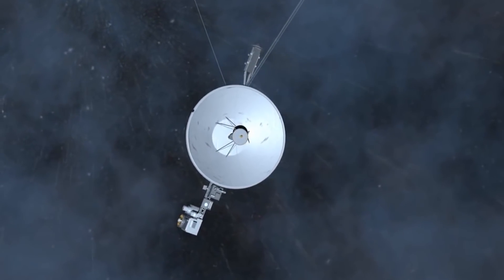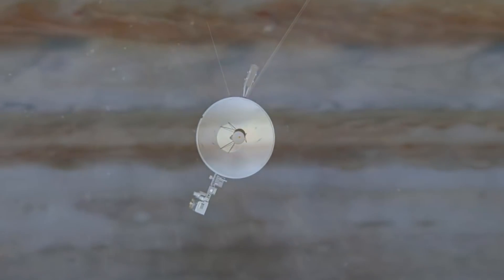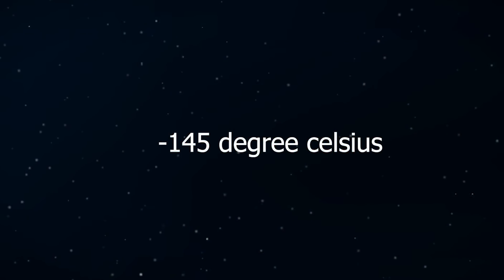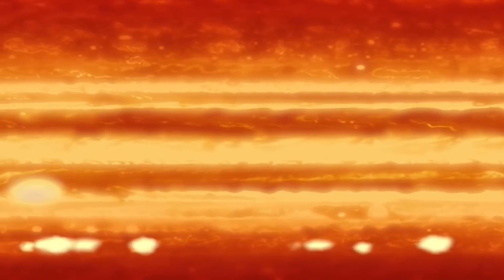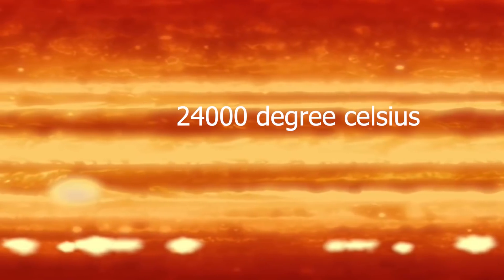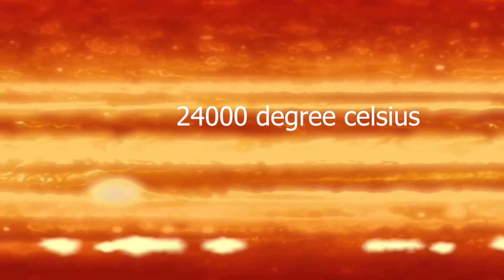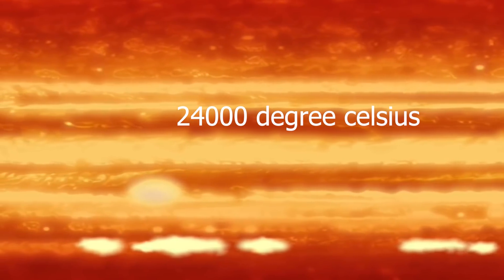The gravity of Jupiter is 2.5 times higher than that of Earth, which is about 24.8 meter per second square. Then the temperature. The temperature of the clouds of Jupiter is negative 145 degrees Celsius. But the temperature of the core is very hot. The temperature of the nearby region of core is about 24,000 degrees Celsius, that is hotter than the temperature of the surface of the sun.